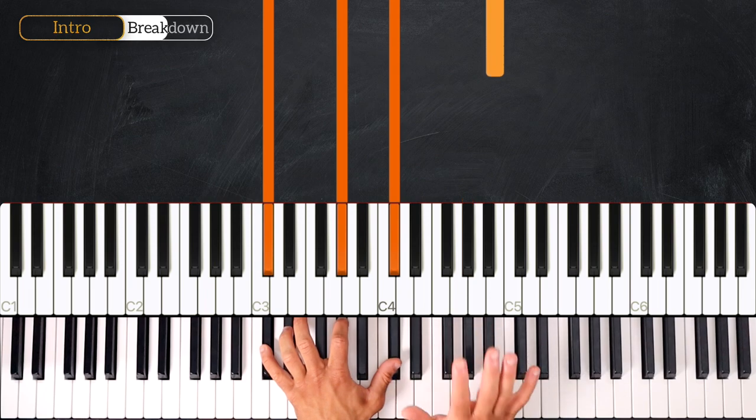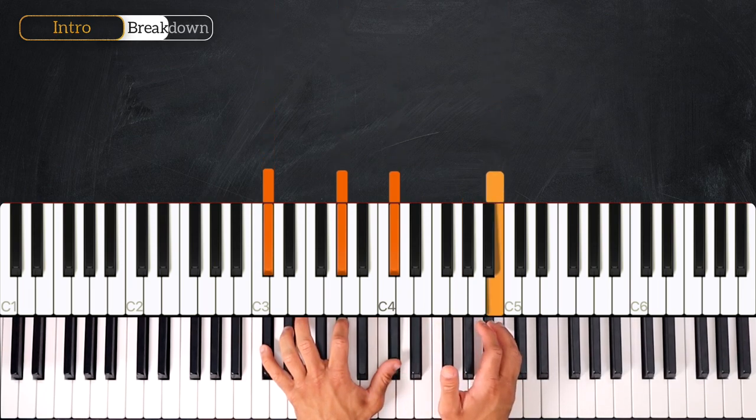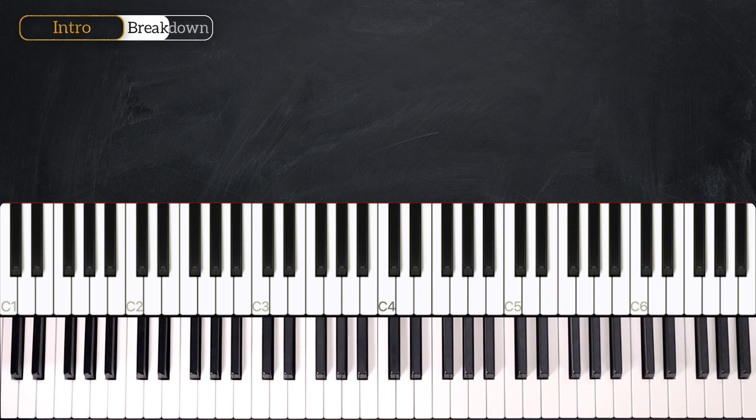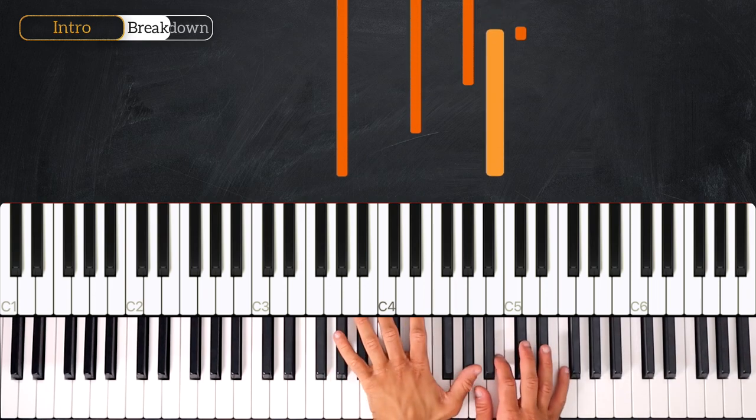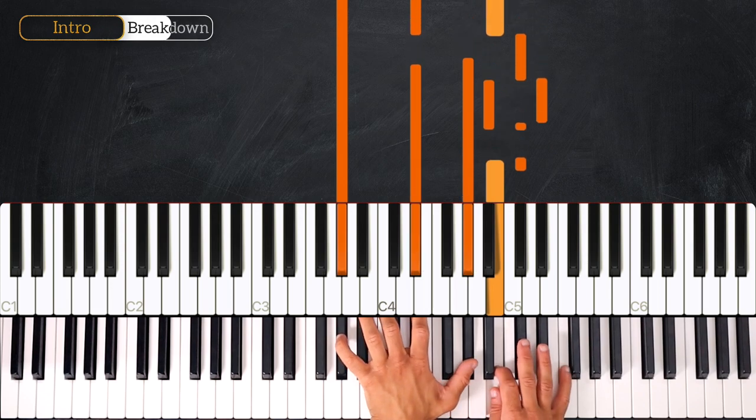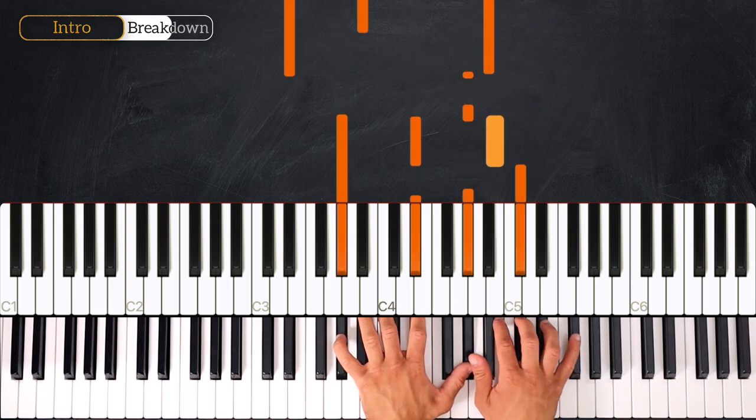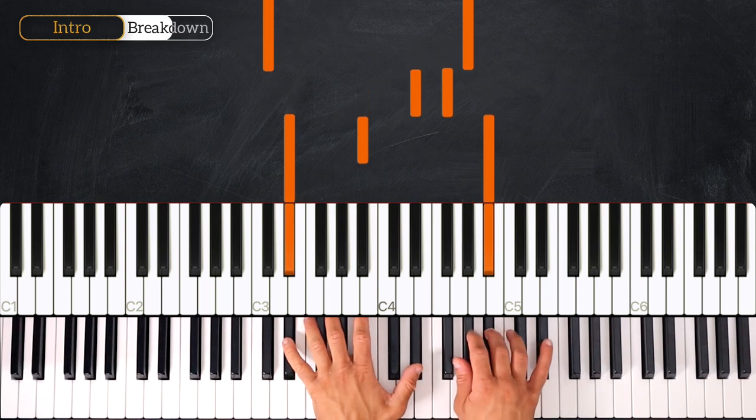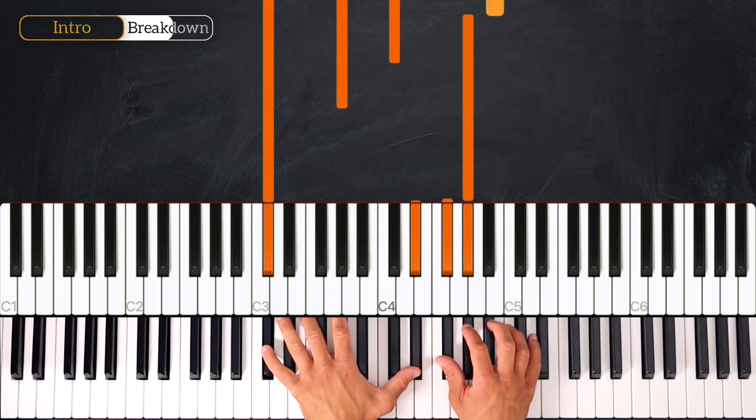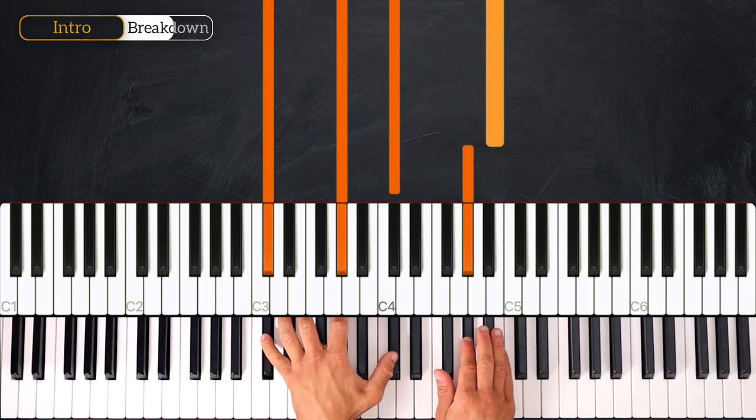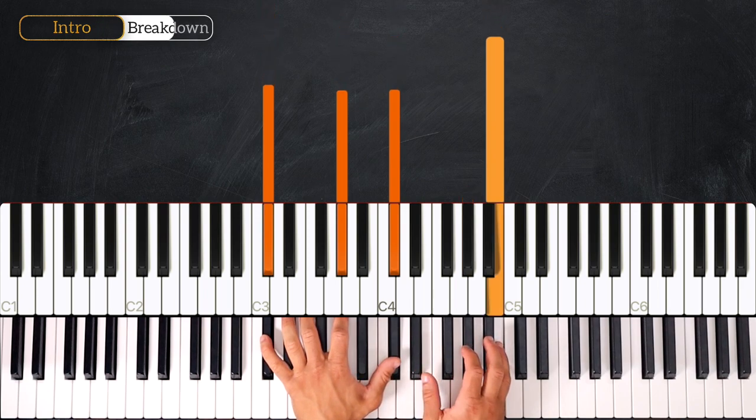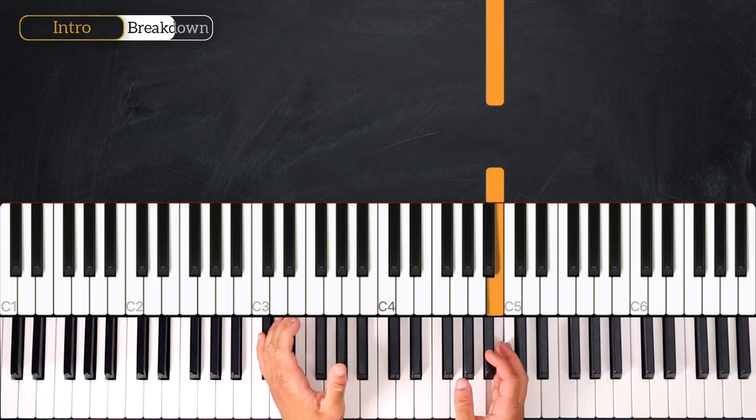And then we end this bar playing B. So let's play the first two bars together. Three, Four, And One, Two, Three, And, Four, And, One, Two, Three, Four, And.